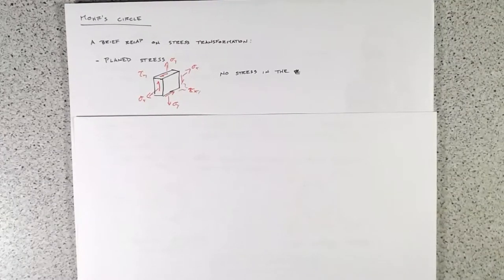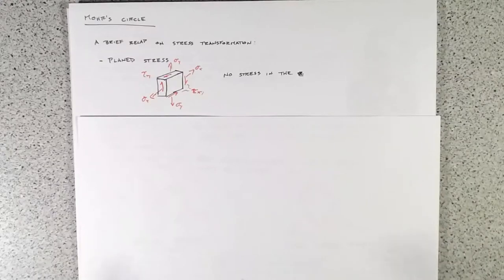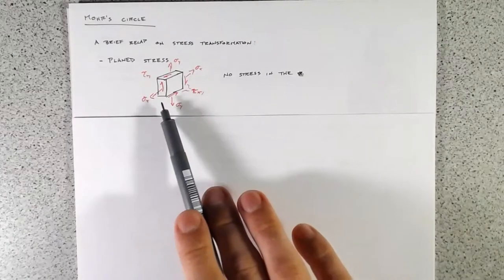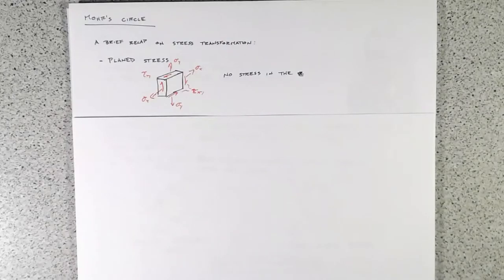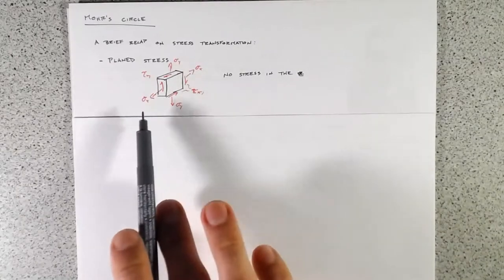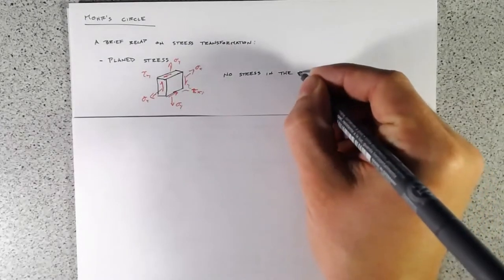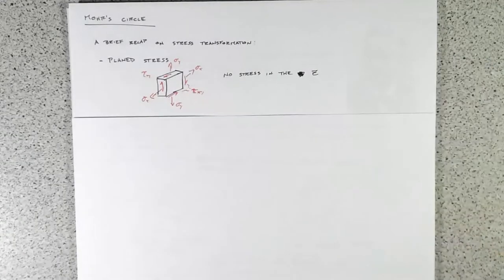Really what we started with was this concept of plain stress. With plain stress, it's simply what we're used to with beams — either bending stress or shear stress — where we only have stress on two of the three faces. We've got stress in the x direction and the y direction, but nothing in the z. So we've got one direction where there's zero stress, and that's the definition of plain stress.